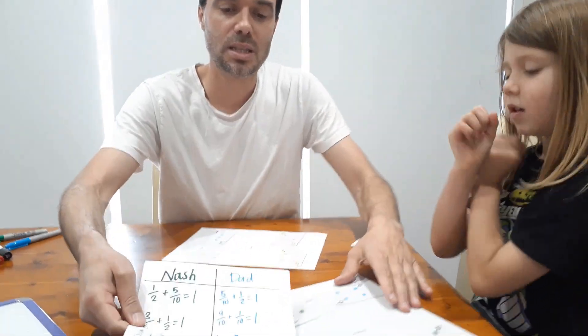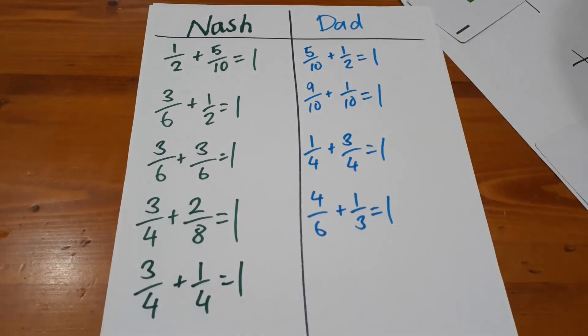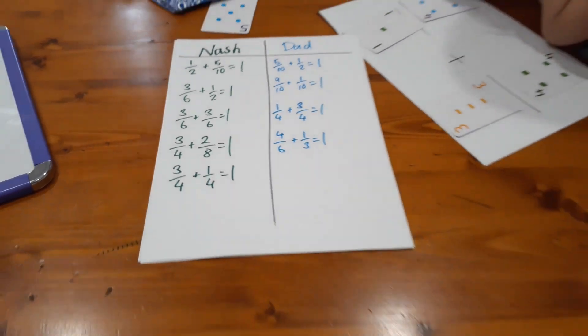All right, so that's the game guys. There's our final scoreboard. So Nash has made five equations, I made four. So that's Make Me Whole.